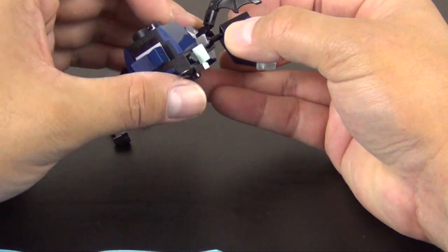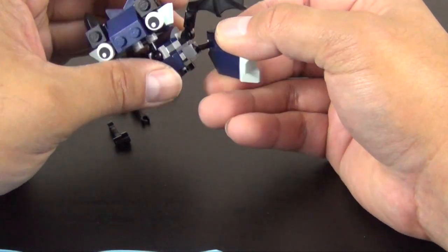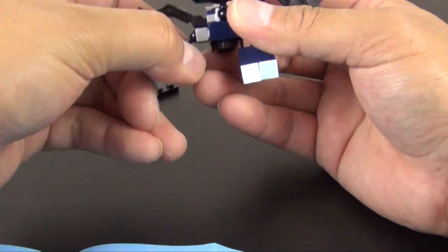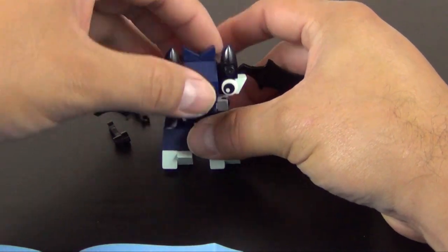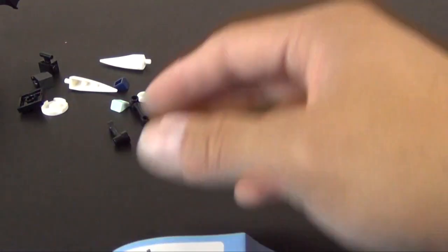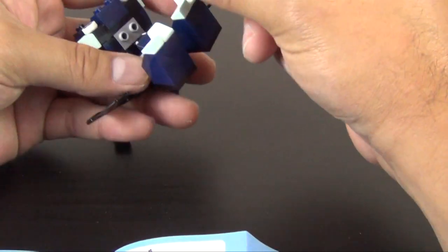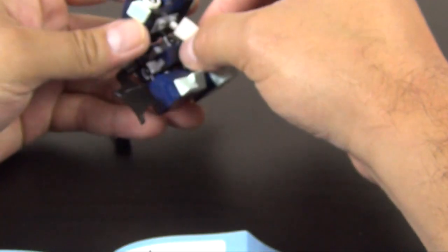Alright, so, what do we got here? That leg. That leg. That there, that there. So he's coming together pretty well. So now, we have a couple of the giant teeth.